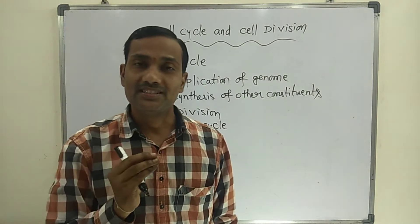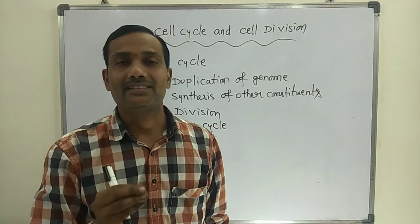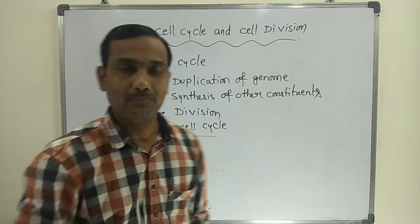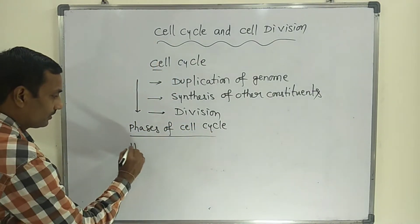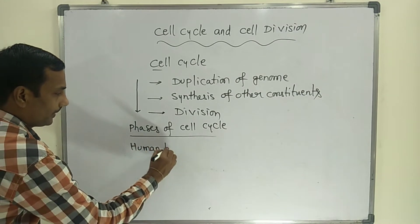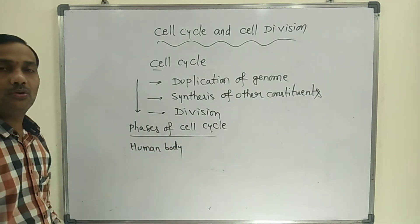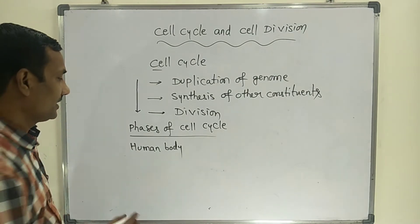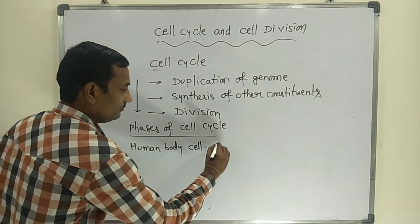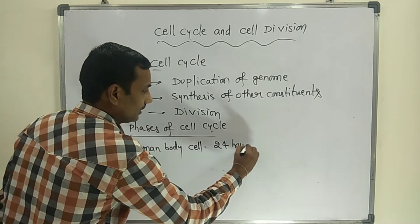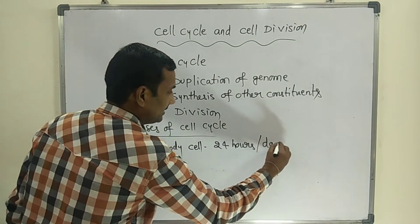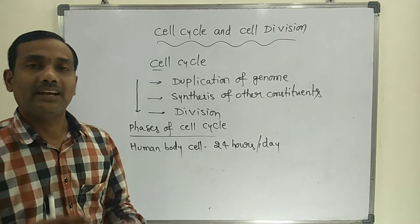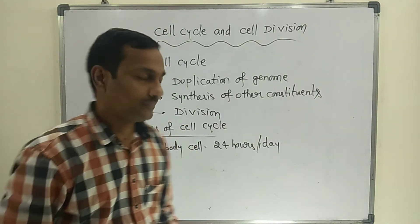Phases of cell cycle. The human body cell takes around 24 hours, that is 1 day, for one complete cell division. That is the approximate time required for one complete cell division.